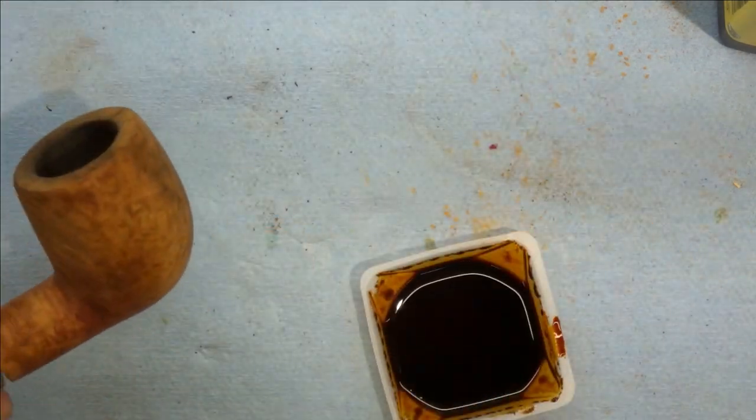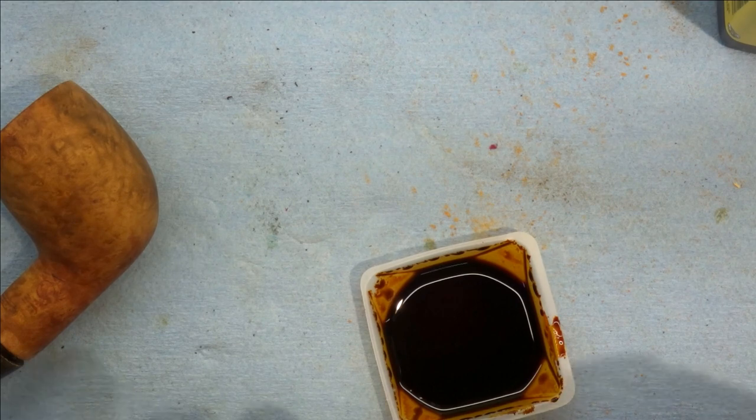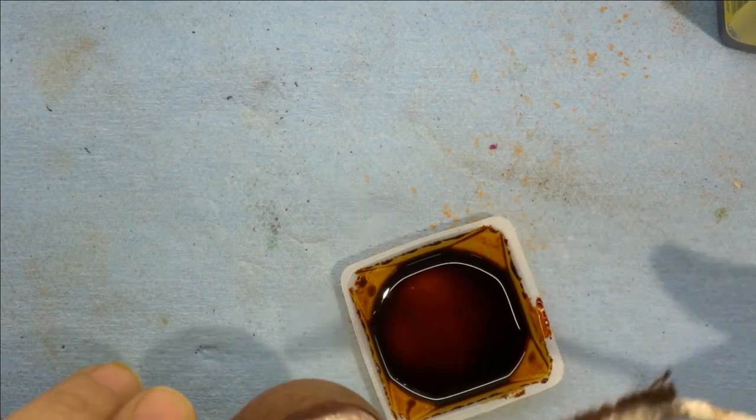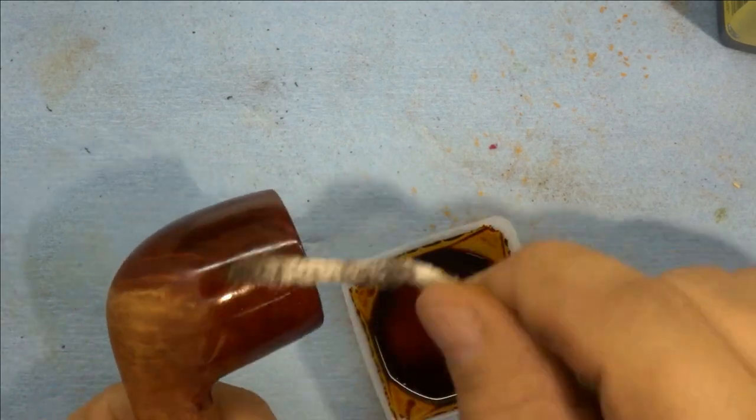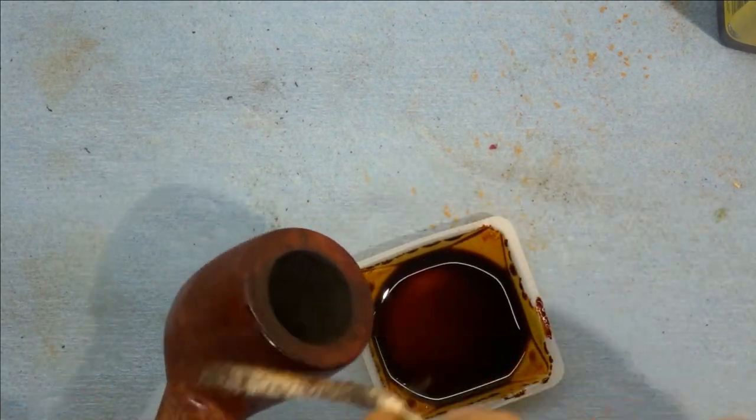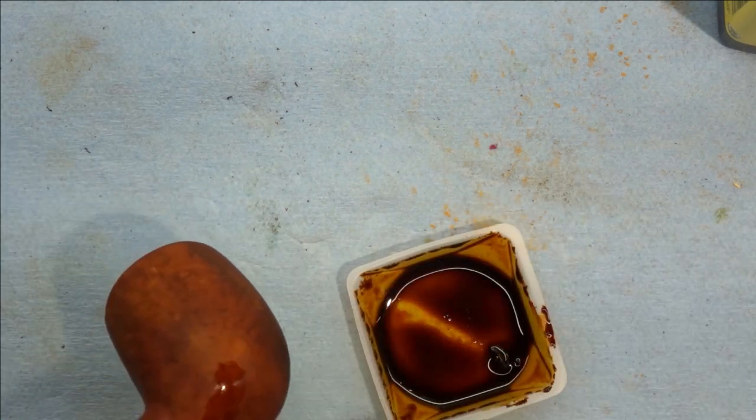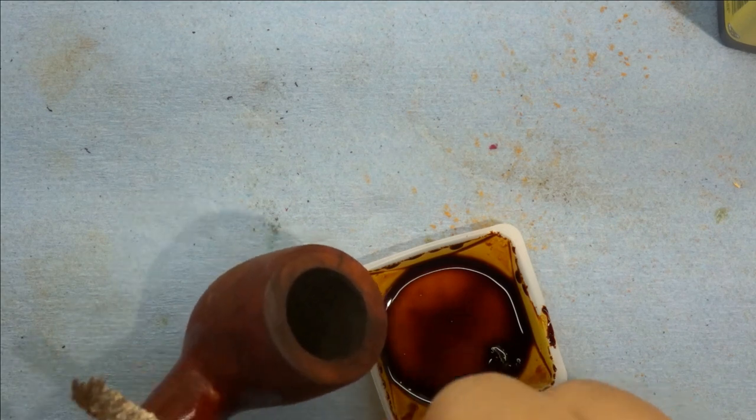I'm going to put it on with the pipe cleaner. Loosen the stem a little bit to use it as a handle, trying to minimize the amount of stain on the stem, although it doesn't really matter because it buffs off pretty quickly. This is a process you develop over time - lots of YouTube videos show pipe makers putting stain on different ways.